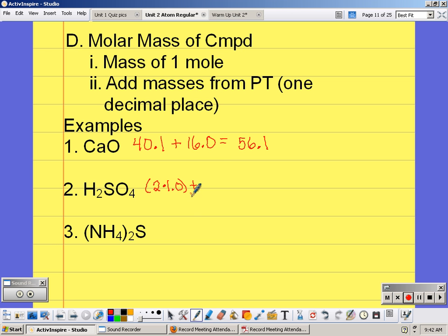Plus the mass of sulfur, which is 32.1, plus four times the molar mass of oxygen, which is 16, and we get 98.1 grams per mole.